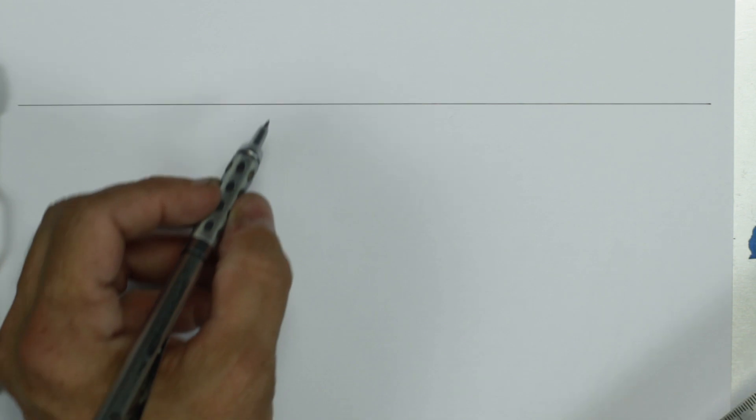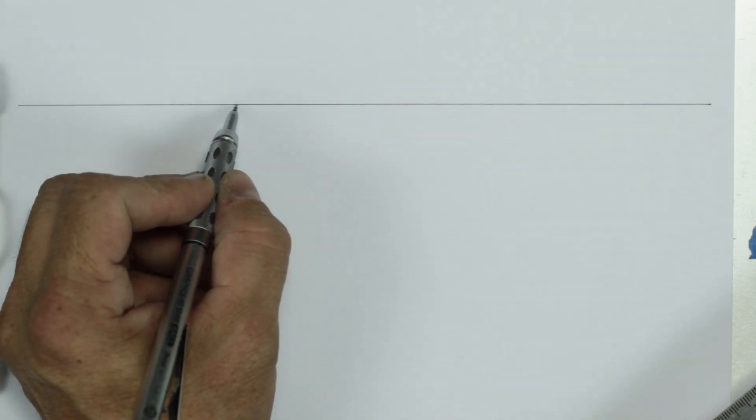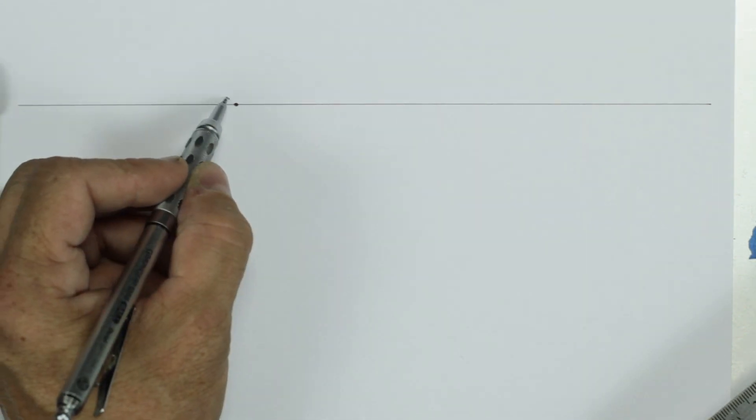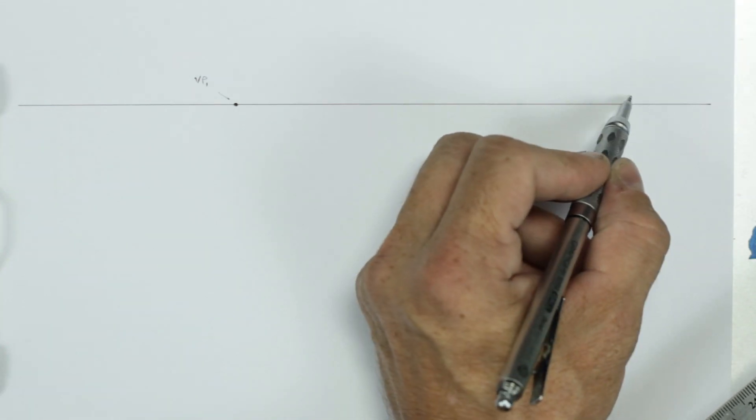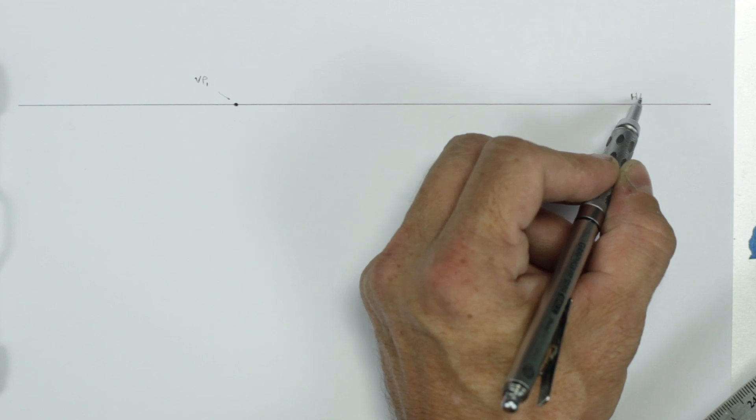Next, we want to find a vanishing point out here. We'll find this somewhere right around here. So this is VP1 on our HL horizon line.